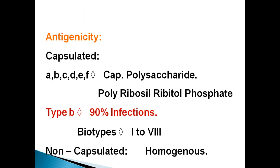Regarding antigenicity: they are capsulated bacteria with a capsule in their body. The types of capsule are a, b, c, d, e, and f according to strain. Different strains have different capsulated types — capsule strain a, b, c, d, e, and f.